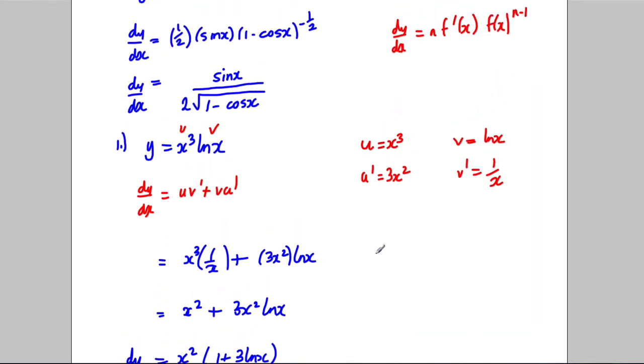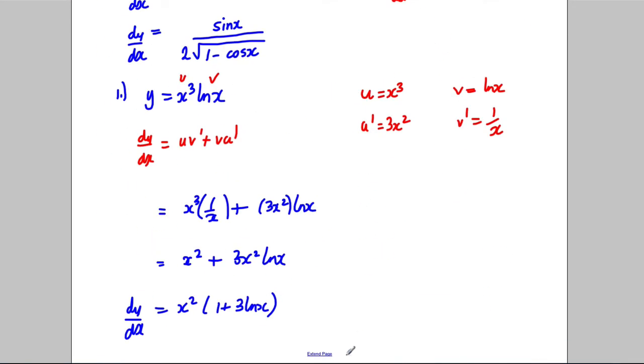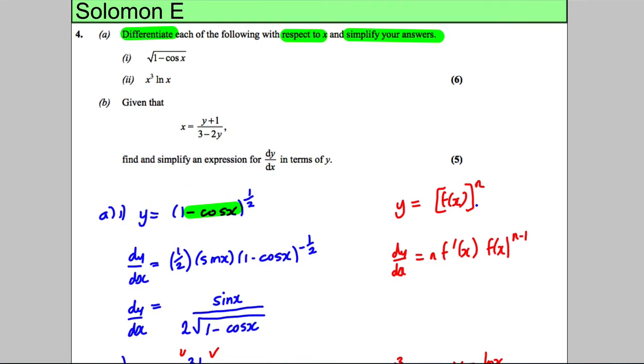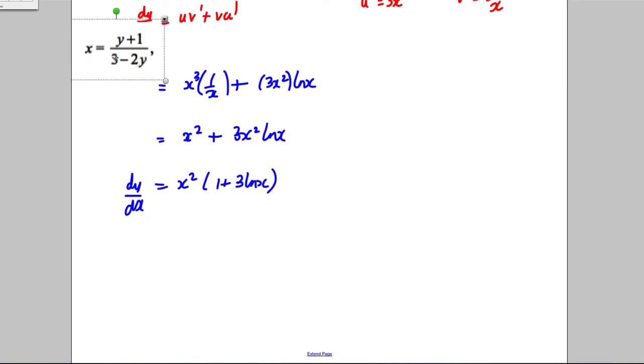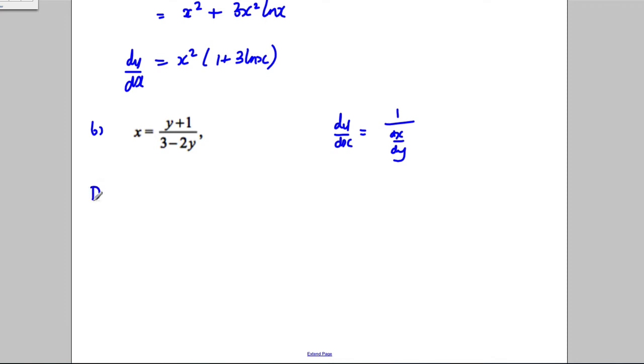Part B asks to find and simplify an expression for dy/dx in terms of y, given that x equals y plus 1 over 3 minus 2y. Alarm bells should ring here—x is the subject, so you need to use dy/dx equals 1 divided by dx/dy. I'm going to differentiate with respect to y.